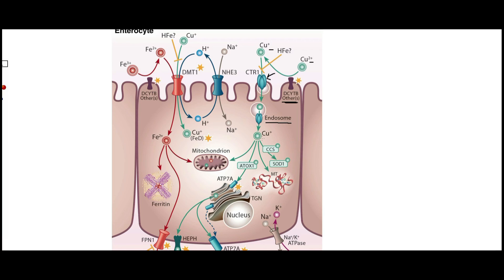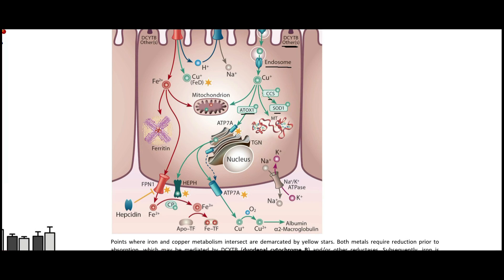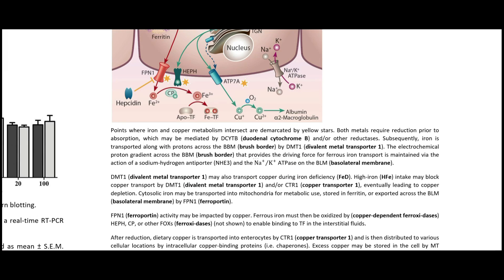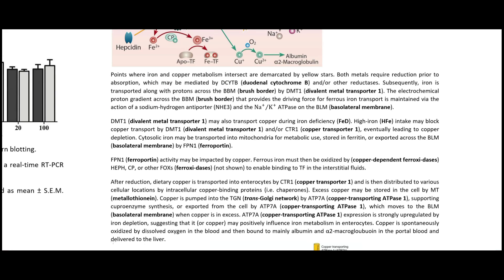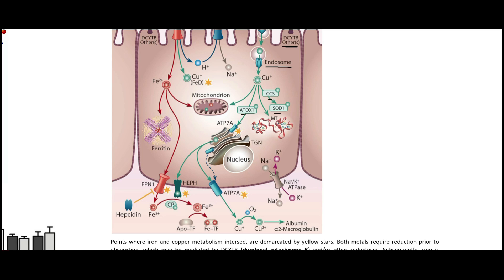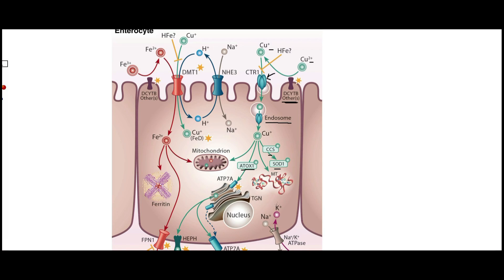The copper can then be released from the endosomes, and there are chaperone proteins — Atox-1, CCS, and SOD-1. Some of these bring copper to metallothionein, which can actually store copper in the cell.